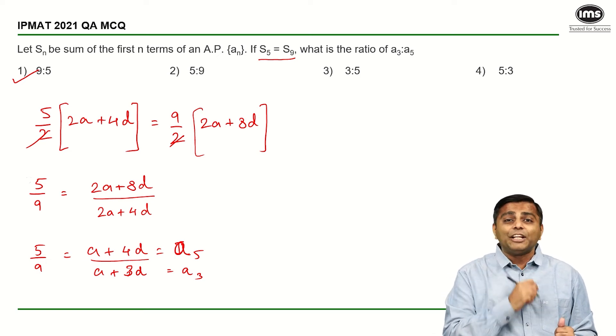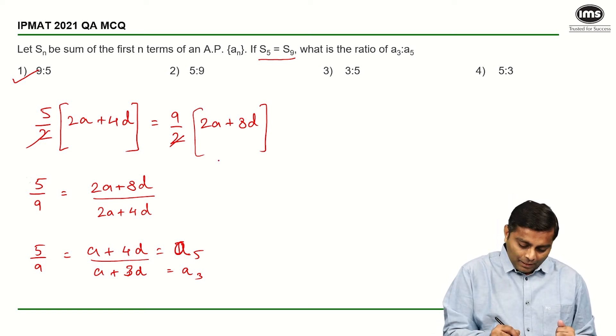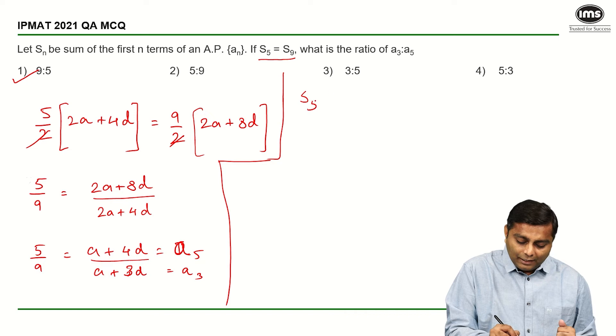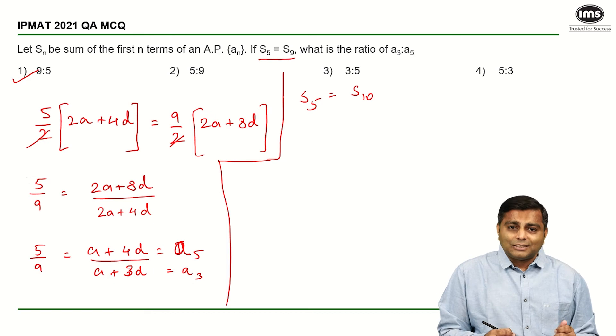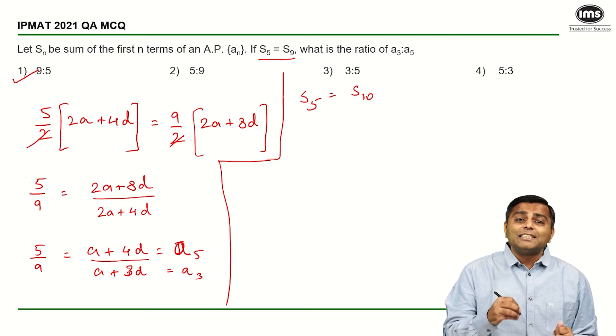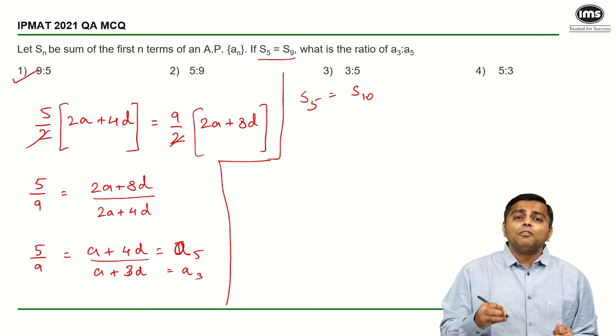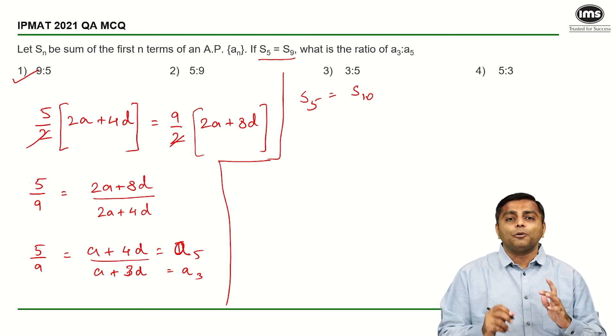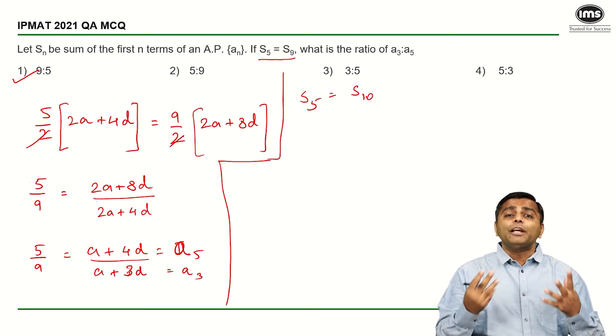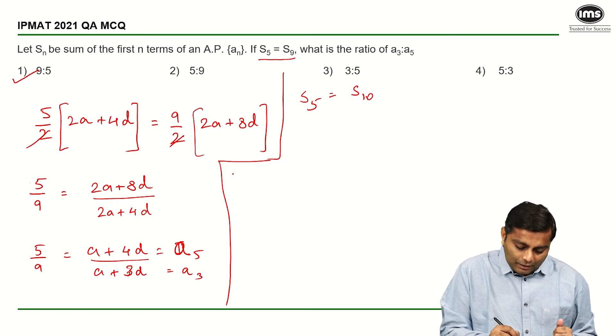So this is a pretty simple question. I wanted to discuss one variation with you, one difficult variation. Let us say the question gives us S₅ is equal to S₁₀. Let us say this is given and the question asks us which of the terms is definitely 0. If S₅ is equal to S₁₀, which of the terms is definitely 0 is what is asked.